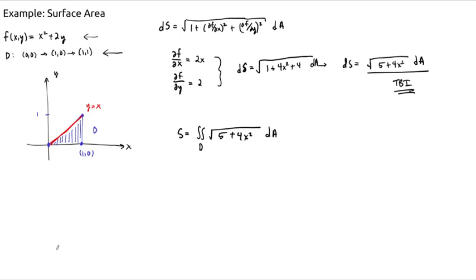And so we see then that if we do this as a type 1, our y would go from 0 to x. And then after that, our x would go from 0 to 1. All right, as a type 2, it would be the other way around. So as a type 2, x would go from y to 1. And then y would go from 0 to 1. Okay, and so these are our two options.